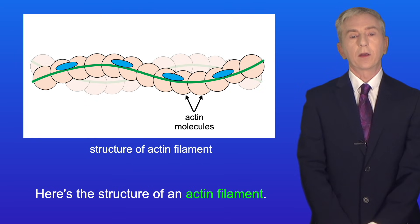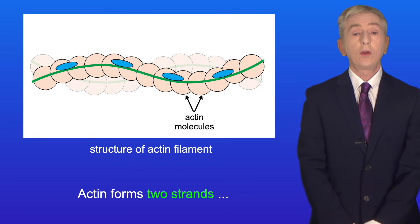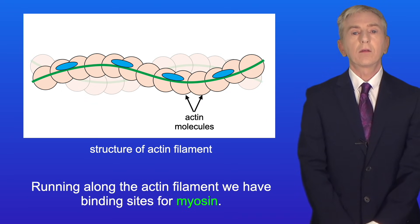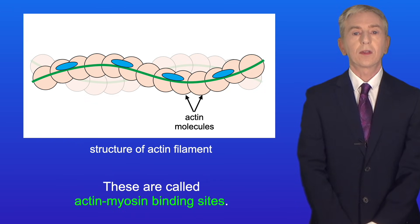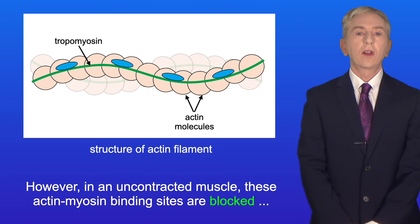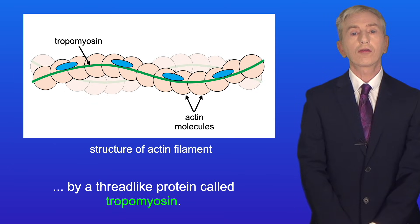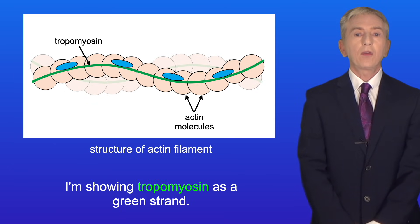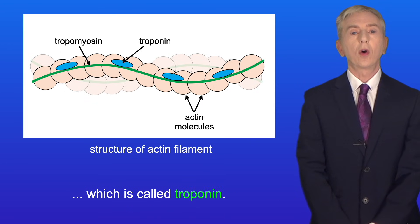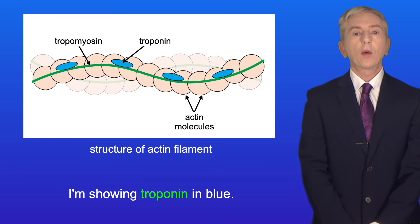Here's the structure of an actin filament. Actin forms two strands wrapped together into a helical structure. Running along the actin filament, we have binding sites for myosin — these are called actin-myosin binding sites. However, in an uncontracted muscle, these actin-myosin binding sites are blocked by a thread-like protein called tropomyosin, shown here as a green strand. Tropomyosin is held in position by another protein called troponin, shown in blue.